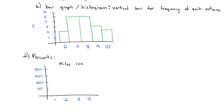What we'll see is that 1 mile was run by 20% of the respondents, 2 miles was run by 30%, 3 miles was run by 40%, and 4 miles was run by 10% of the respondents.